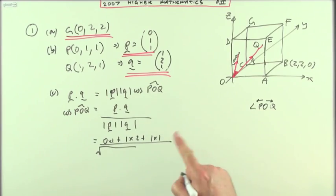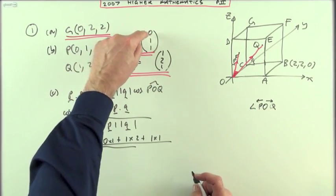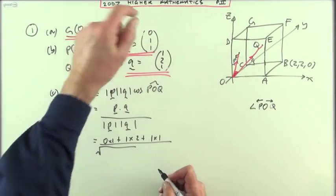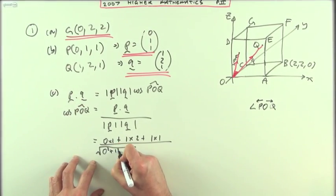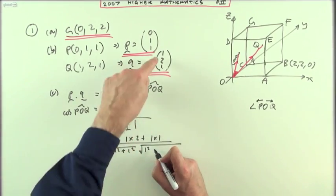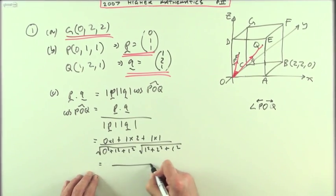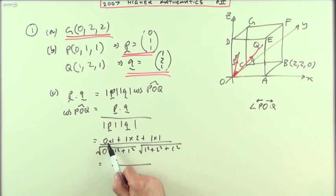The length of P: Pythagoras in three dimensions—square and add the components: zero squared, one squared, one squared. Q similarly: square and add the components—one squared, two squared, one squared. Tidying that all up, nothing and two and one makes three. One and one is two, so I've got the square root of two, and here I've got one and one and four makes six.